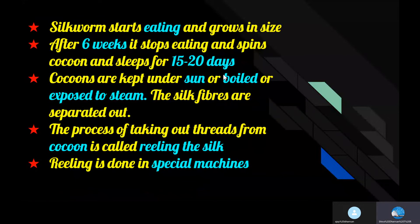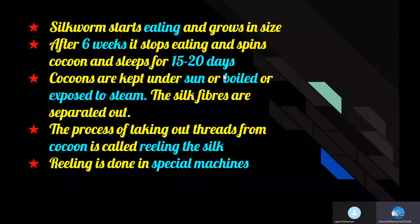A part of the cocoon is used for obtaining silk fiber. The cocoons are kept under the sun, boiled, or exposed to steam, and the silk fiber is separated out. The process of taking out threads from the cocoon for use as silk is known as reeling of silk. Reeling is done in special machines that unwind the threads or fibers of silk from the cocoon. Silk fibers are then spun into silk threads, which are woven into silk cloth by weavers.